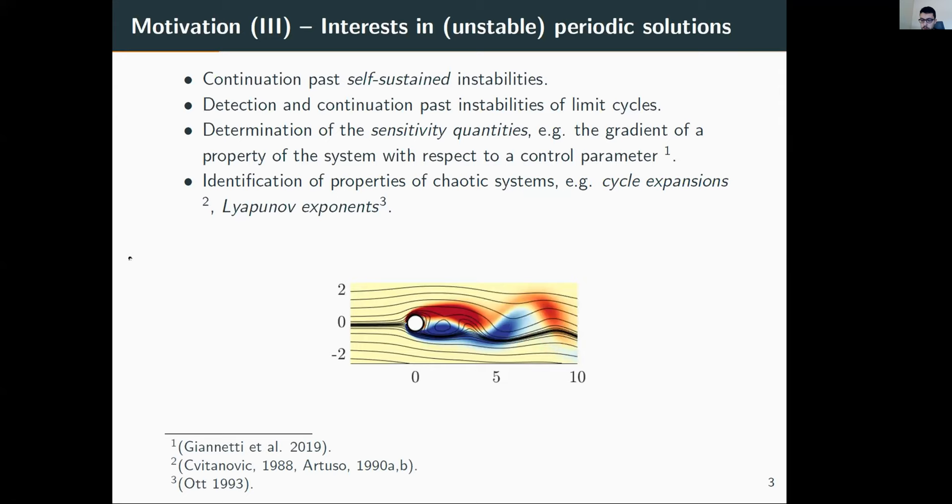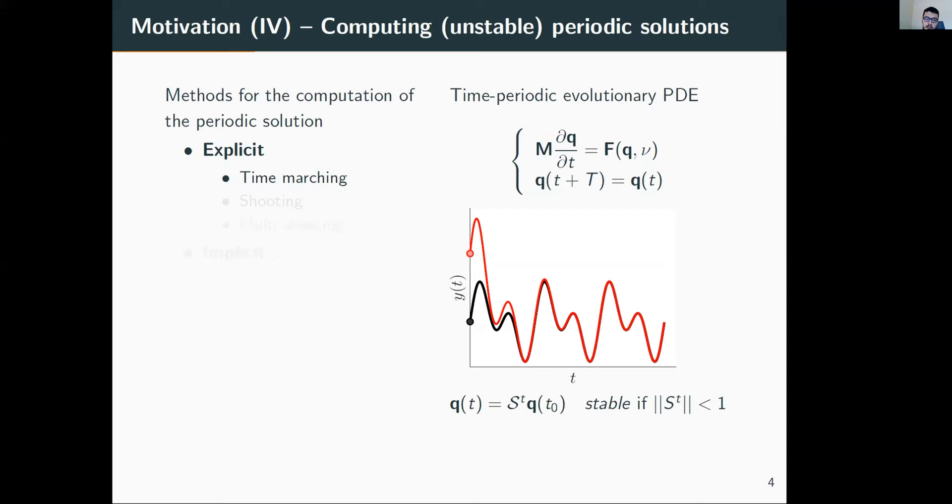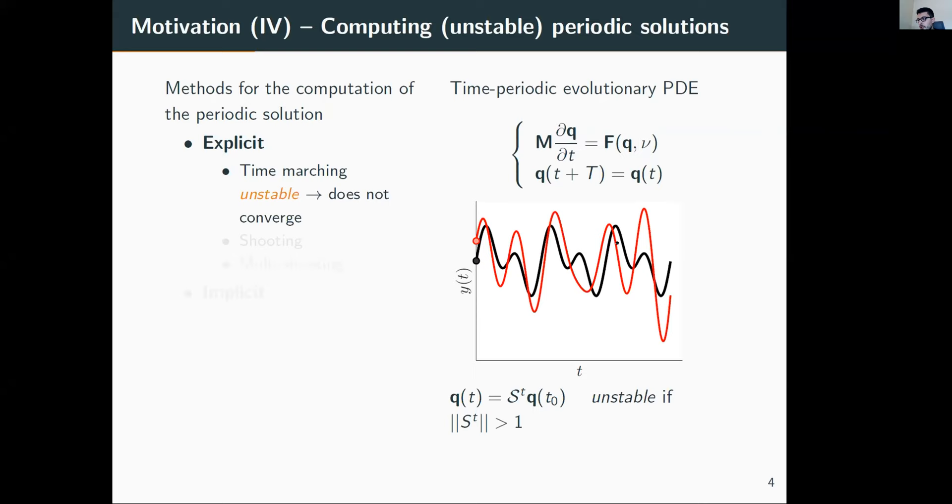Due to their importance, there is a large family of methods to compute periodic orbits, but we distinguish two families: an explicit methodology and an implicit one. Let's discuss the explicit family. We may find the classic time marching, which means we integrate the governing equations with our favorite method, like Runge-Kutta. If the system is stable, we converge towards the periodic orbit, but if the solution is unstable, we need to stabilize it artificially.